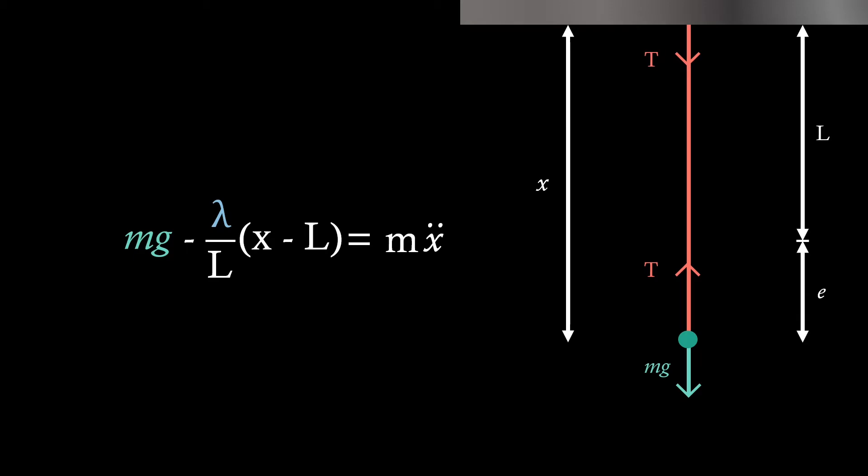Now what we're going to do is seek the equilibrium position. This is where the acceleration is just zero. So we'll see this right-hand side will just vanish. Then we'll solve for x. After some simple rearranging, we see we get this expression for x. This is actually our equilibrium point, which we'll call xEQ, which equals our natural length plus our natural length times mass times gravity over lambda.